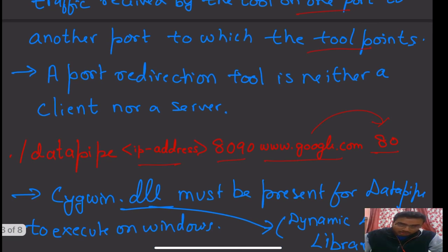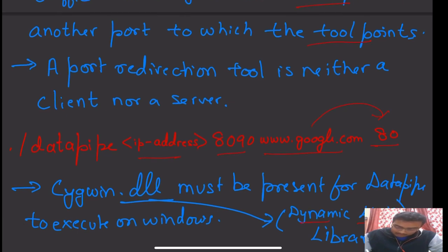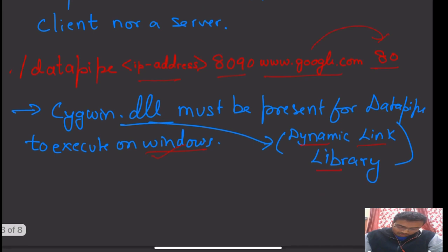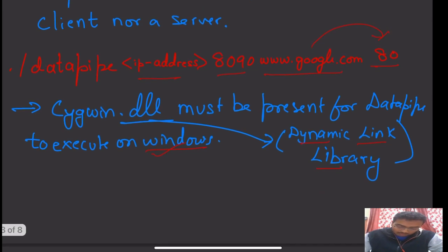In Windows, we make use of Cygwin. Cygwin.dll, where DLL stands for dynamic link library, must be present for data pipe to execute on Windows platform.